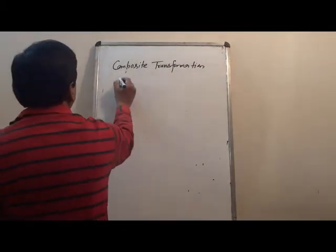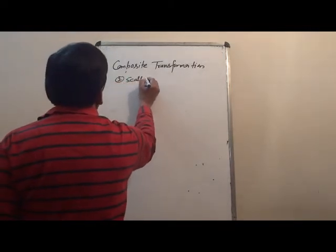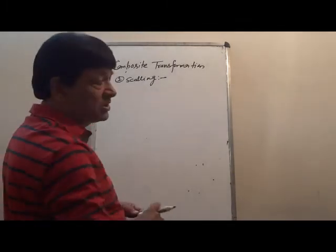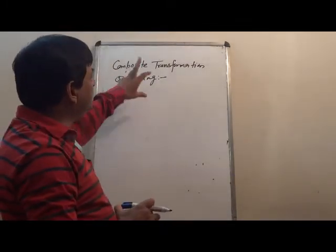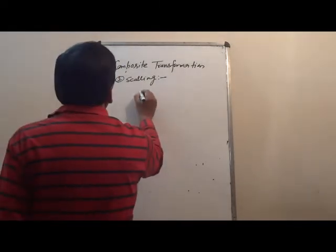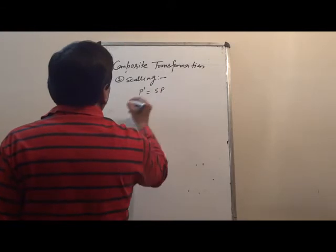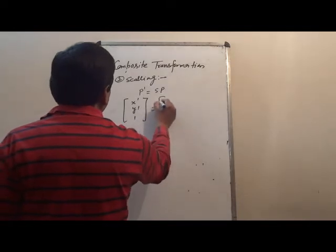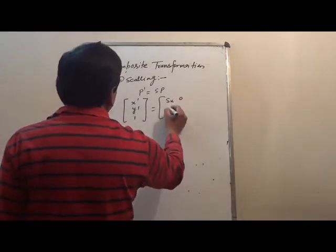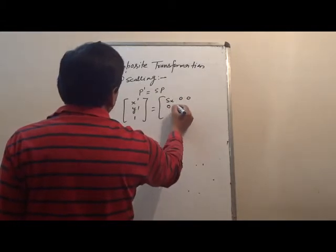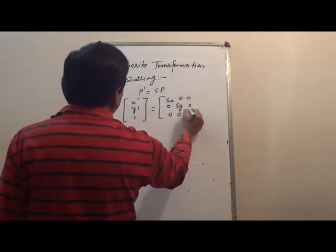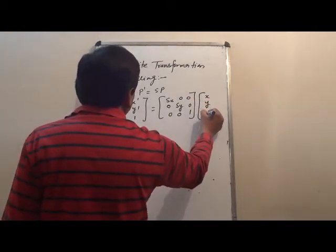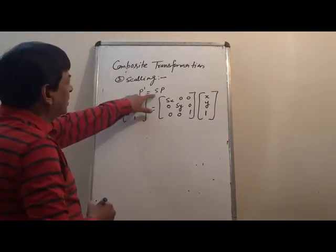Next we take scaling. Two successive scalings are composite scalings. We write P dash equals to S into P, or x dash, y dash, 1 equals to the scaling matrix [Sx, 0, 0; 0, Sy, 0; 0, 0, 1] into x, y, 1.